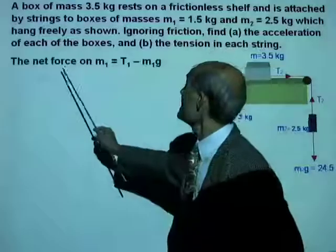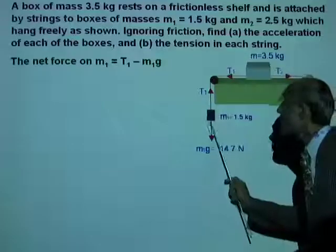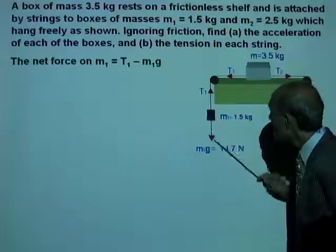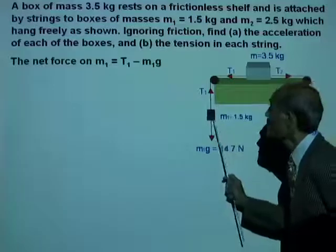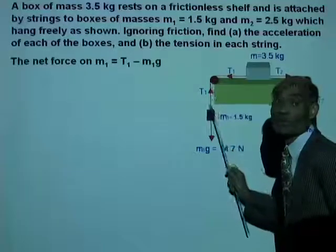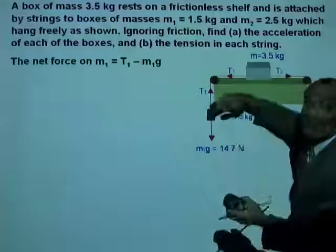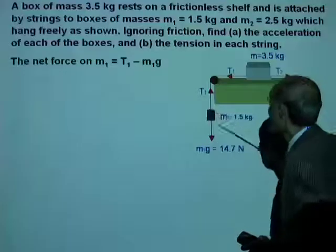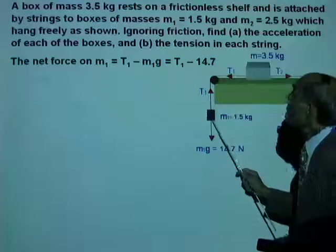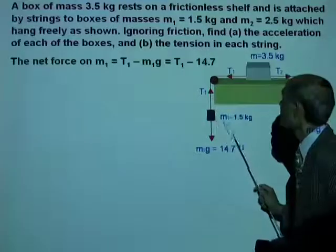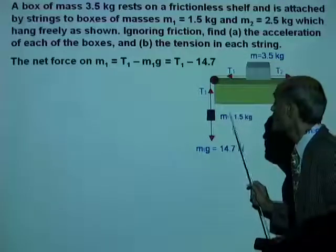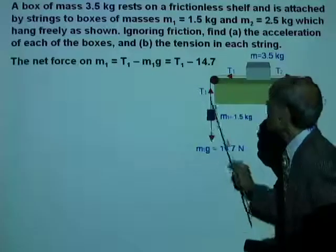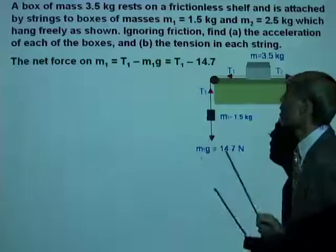The net force on M1, let's talk about M1, this mass. What is the net force on this M1? The weight M1G is acting down the plane. The tension T1 is acting up. And we would assume that the system moves from left to right. That means the net force on M1 is T1 minus M1G. Now what is M1? M1 is 1.5 kg, and therefore its weight M1G is 1.5 times 9.8, that is 14.7.